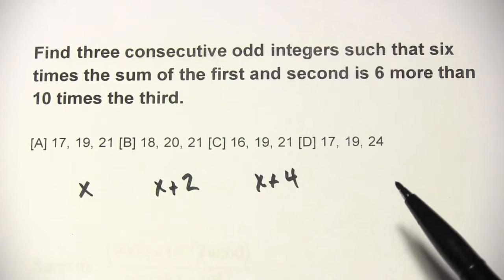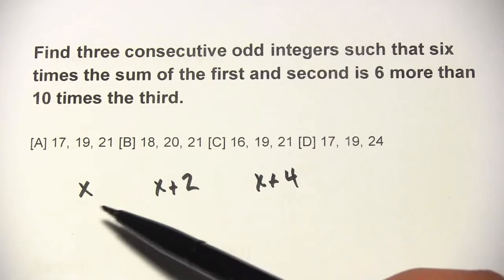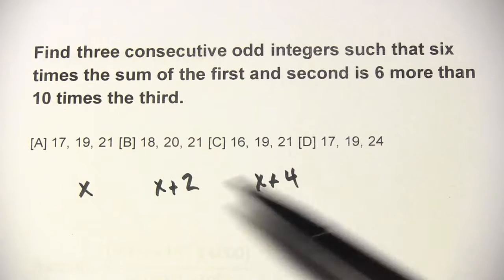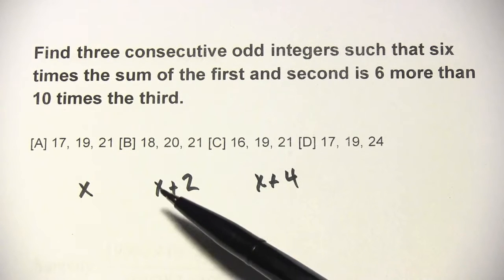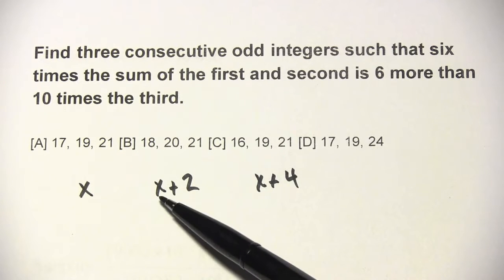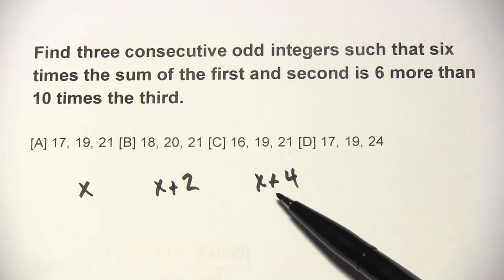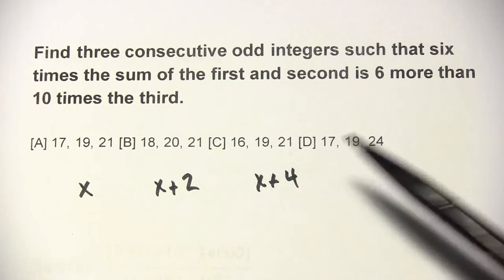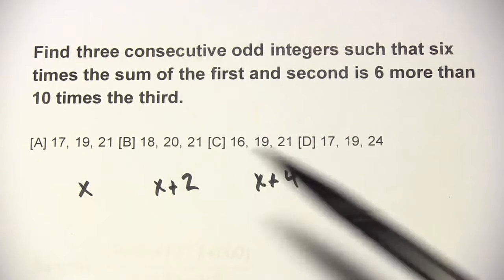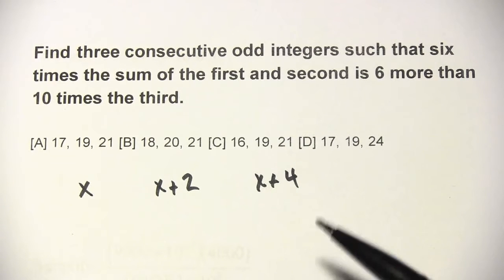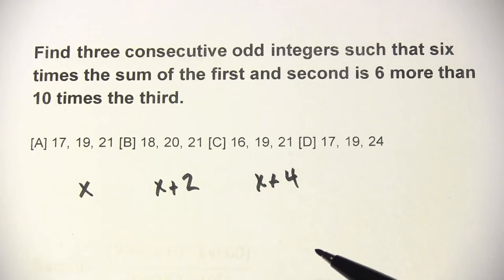So if you think about three consecutive odd integers — 3, 5, and 7 — x would be 3, 5 would be 3 plus 2, and 7 would be 3 plus 4. So that's the formula for consecutive odd or consecutive even integers.